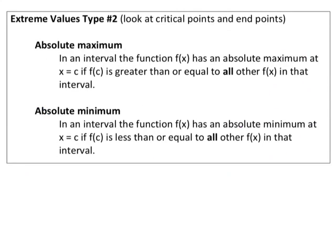Next we're looking at extreme values again, but in this case we're talking about absolute maximum and absolute minimum. Let's read the definition first. In an interval, the function f of x has an absolute maximum at x equals c if f of c is greater than or equal to all other f of x in that interval. You might have several points that are local maximum, but the highest point on that graph will be the absolute maximum.